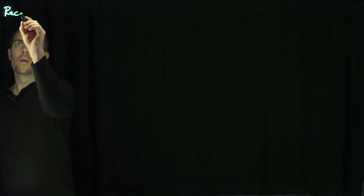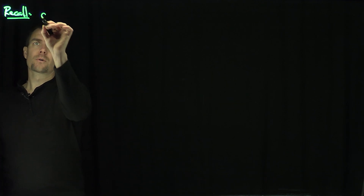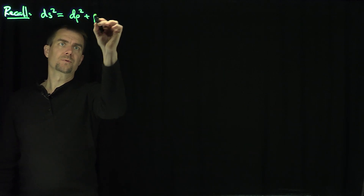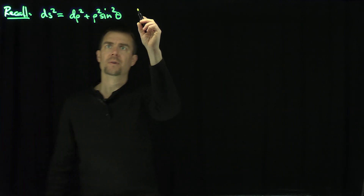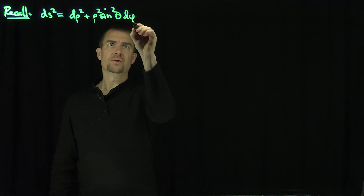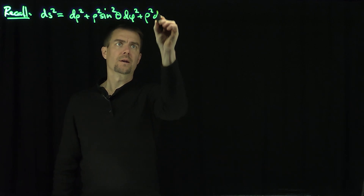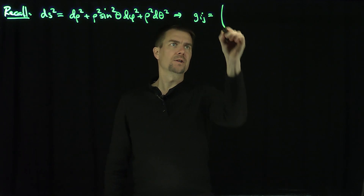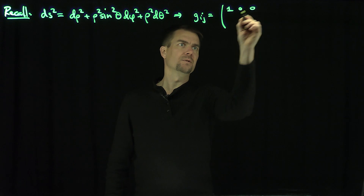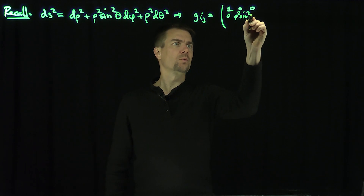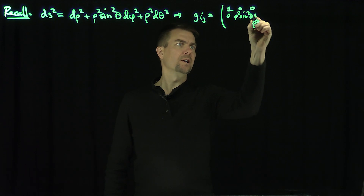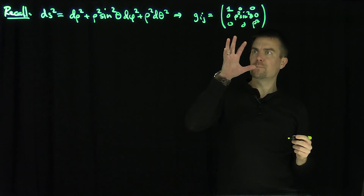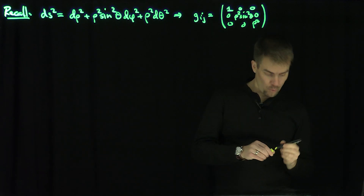Let's recall that in spherical coordinates, we have ds² = dρ² + ρ² sin²θ dφ² + ρ² dθ², which tells us that our metric tensor g_ij is equal to the diagonal matrix with entries 1, ρ² sin²θ, and ρ². These are orthogonal curvilinear coordinates because we have a diagonal matrix.